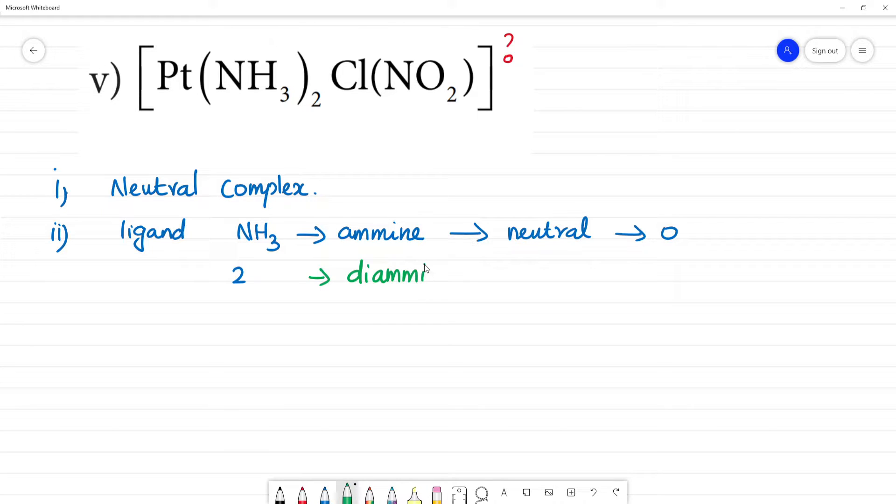Clear? Next, Cl is present. This is the first ligand. The second ligand is Cl. Cl is chlorido. One Cl is present, so this is chlorido. This is a negative ligand. The charge is minus 1.